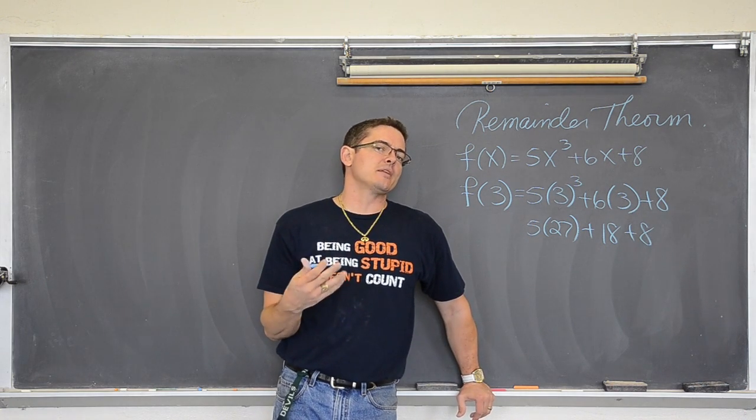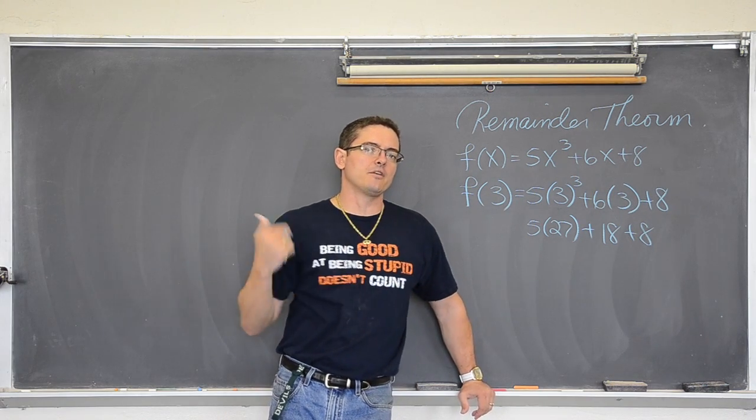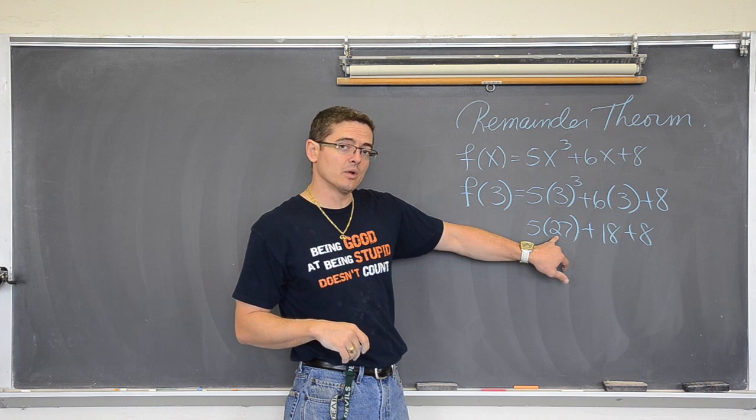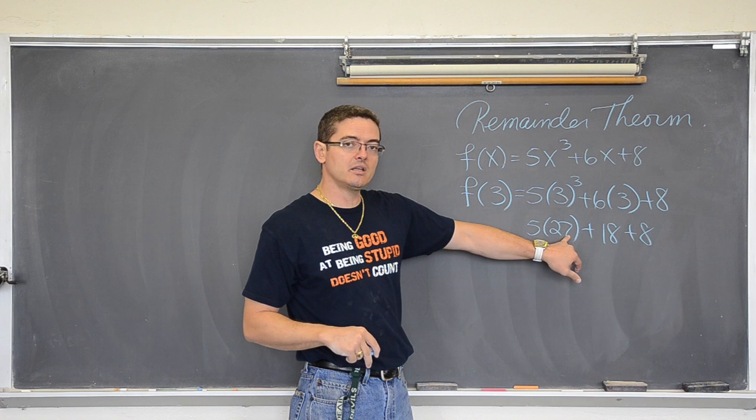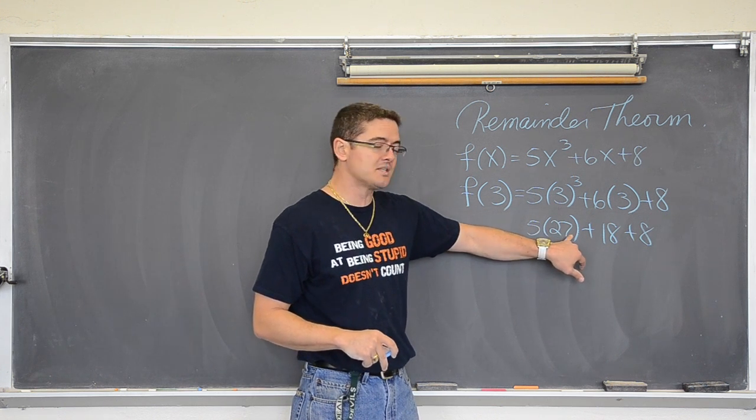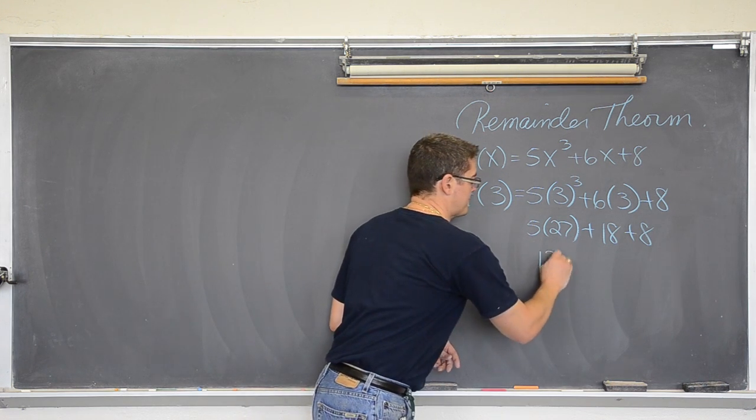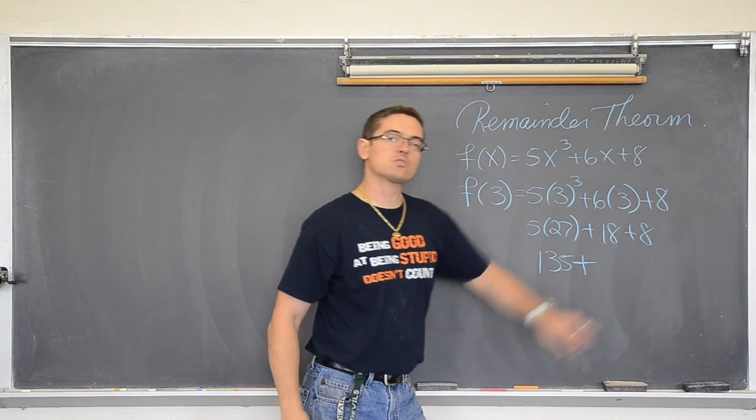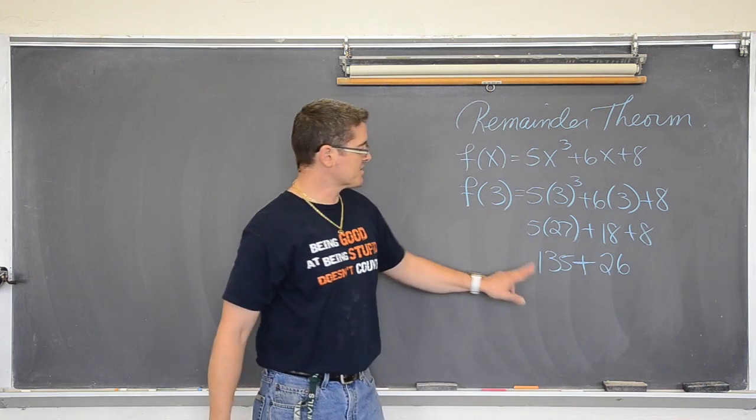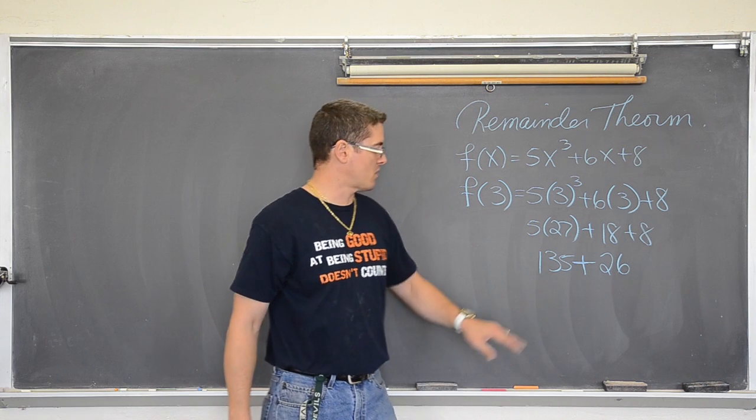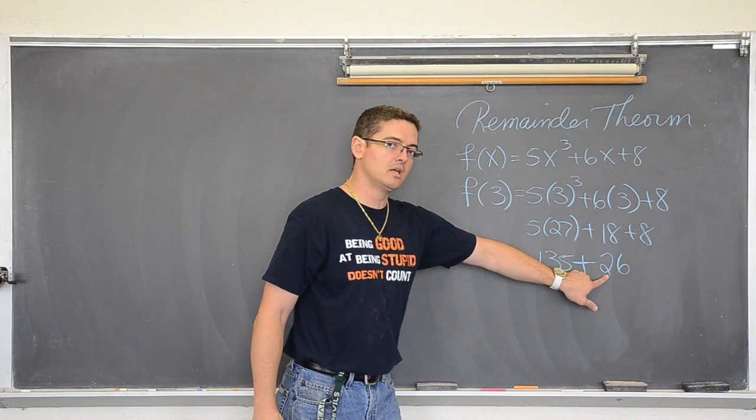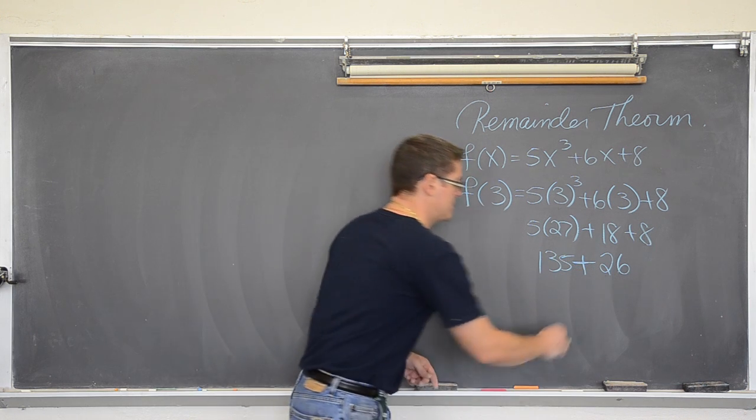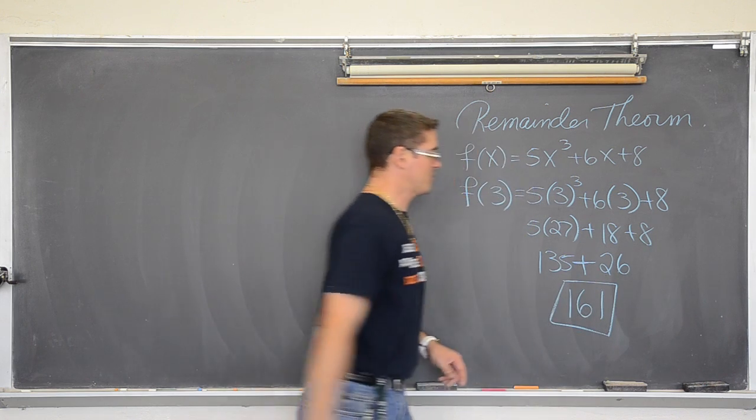Well, mental math, if you are trying to do mental math, you should be going left to right. Not right to left like you did on your paper. What is five times twenty? Five times twenty is a hundred. And five times seven is thirty-five. So five times twenty-seven is a hundred plus thirty-five. So one thirty-five plus, well, what is eighteen and eight? Eighteen and eight is twenty-six. And now what is one thirty-five plus twenty-six? Well, it is one thirty-five plus twenty, which is one fifty-five. And one fifty-five plus six is one sixty-one. So we got through that without the aid of the calculator.